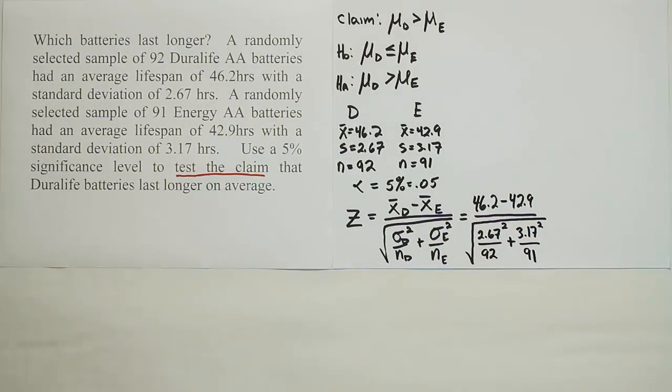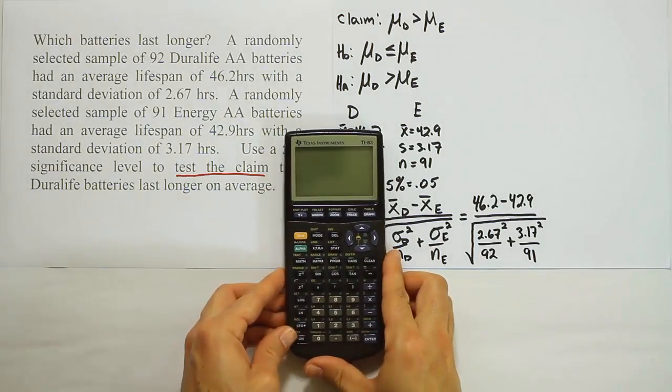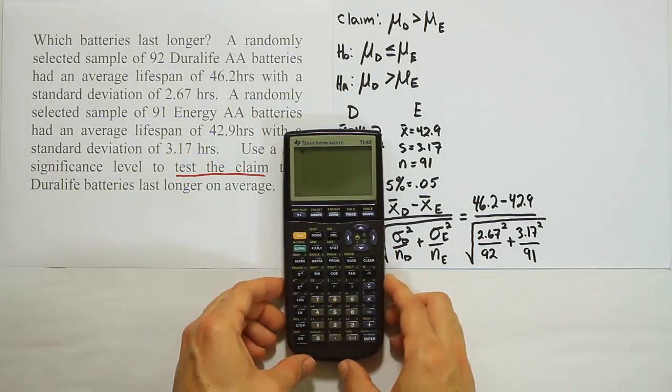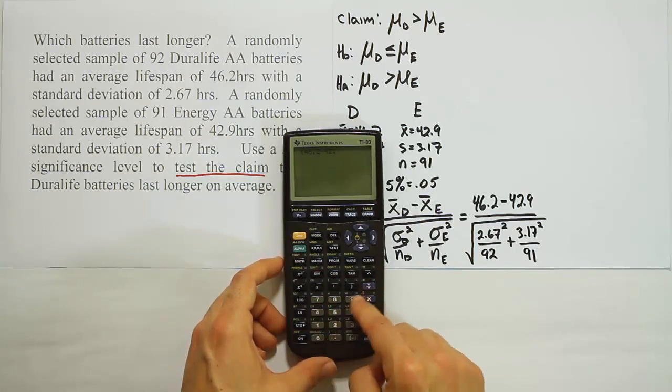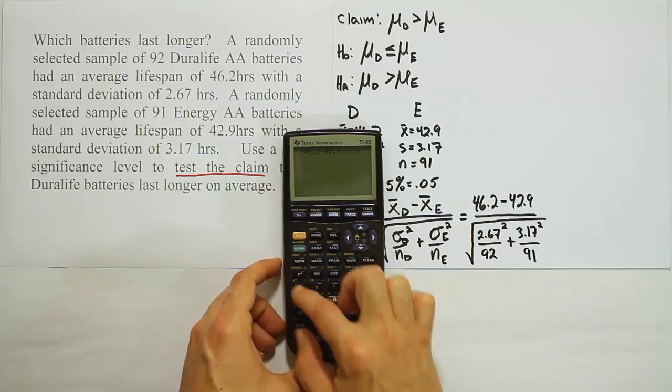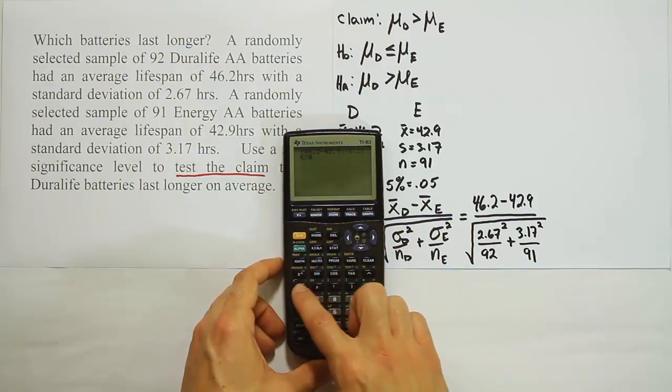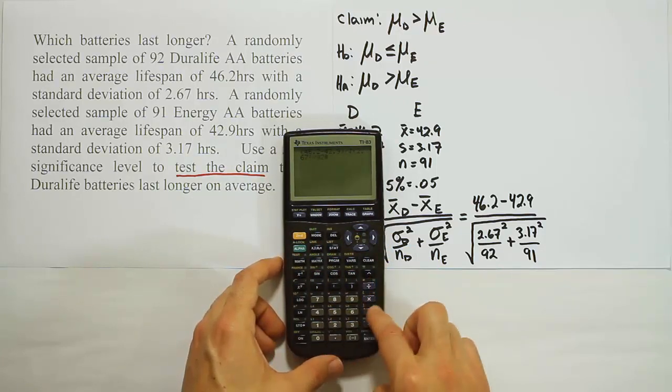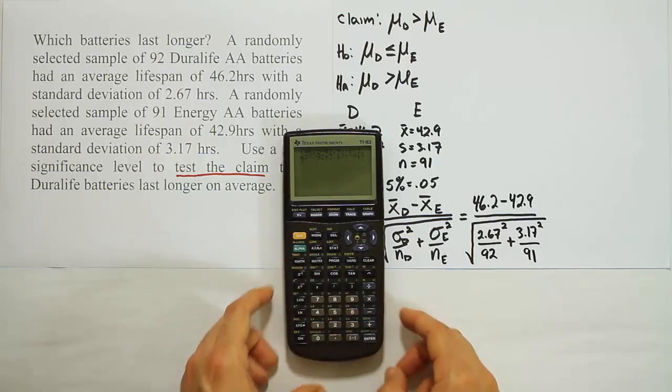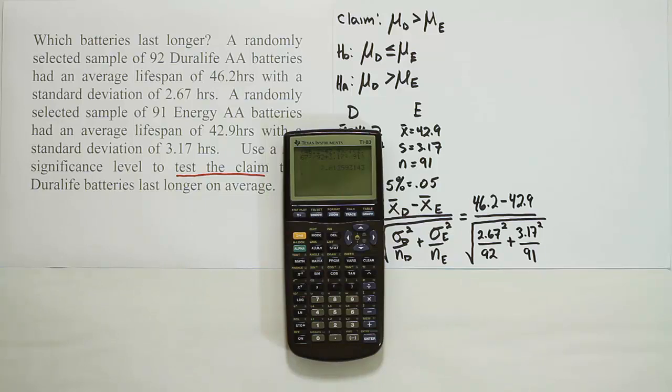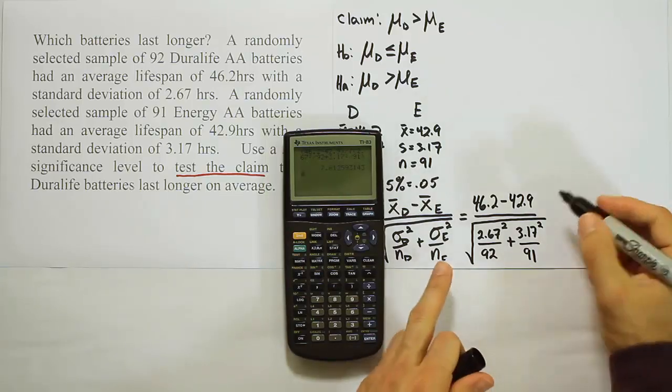So let's pull out our calculator, figure out what that turns out to be. I'm going to put the top part in parentheses. That's going to be 46.2 minus 42.9. Close that top parentheses. Then I'll hit divide by, square root of, 2.67 squared divided by 92 plus 3.17 squared divided by 91. Close it up at the end, hit enter and we get the answer 7.61. So this is quite a test stat. It's a very large test stat.